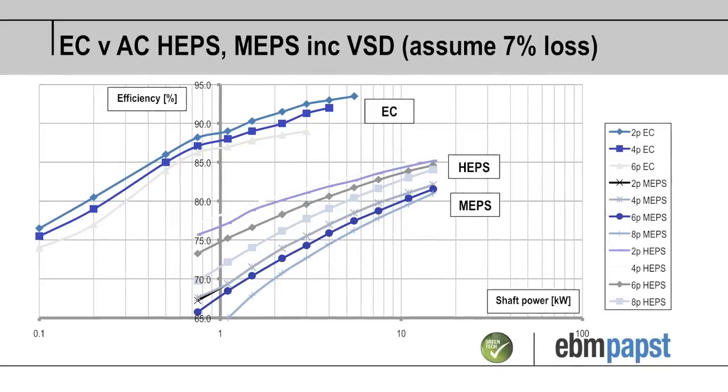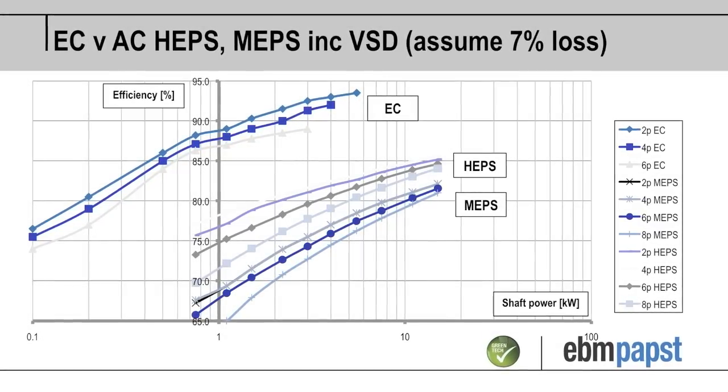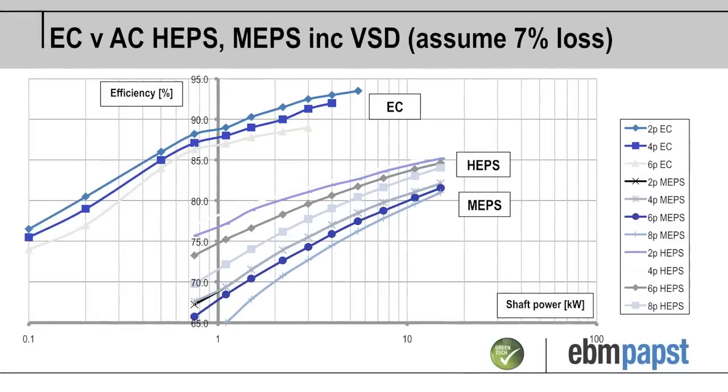What I've done here is I've made it a like for like comparison and put a VSD on the MEPS and HEPS motors, and I've assumed that there were 7% losses in the VSD.